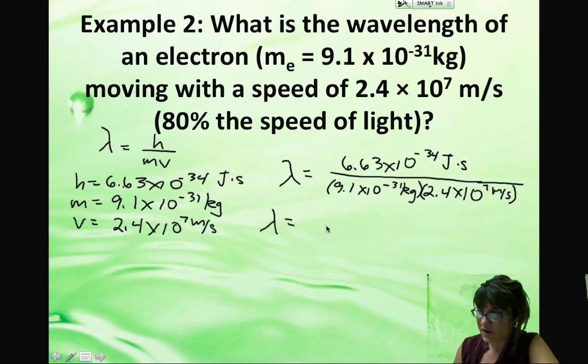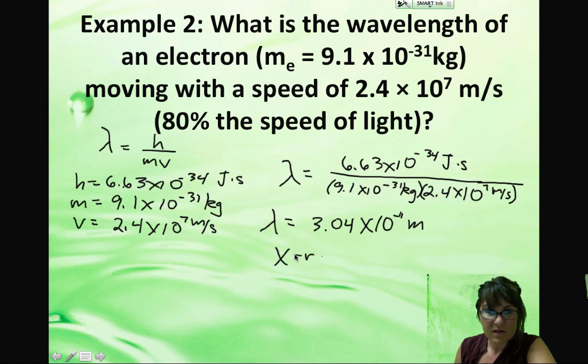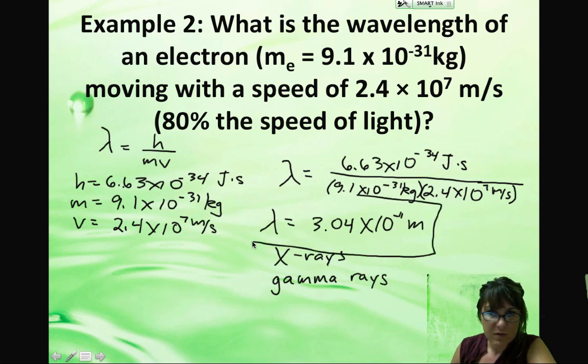So our wavelength turns out to be, let's see, crank it through the calculator, 3.04 times 10 to the negative 11 meters. Boy, that's still a really small wavelength, but guess what? This is the wavelength that we observe in things like x-rays or gamma rays. This is about that same wavelength. So this is a wavelength that we actually can detect and measure.